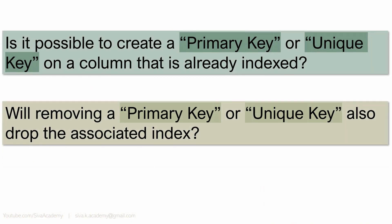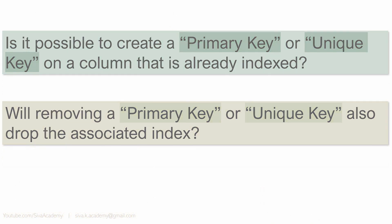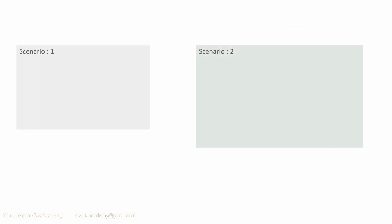The first question is: is it possible to create a primary key or unique key on a column that is already indexed? The second question is: will removing a primary key or unique key also drop the associated index? Since both these questions are related to each other, I am going to explain through two scenarios.